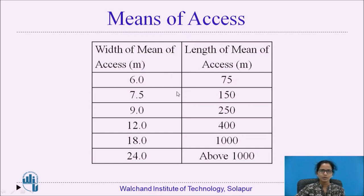For residential plots, the following widths of roads are defined according to the width of the means of access. If the width of the means of access is 6 meters, the length provided will be 75 meters. If the width is 7.5 meters, the length will be 150 meters. If the width is 9 meters, the length will be 250 meters. If the width is 12 meters, the length will be 400 meters. If the width is 18 meters, it is 1000 meters. And for a 20-meter width, the length will be above 1000 meters.